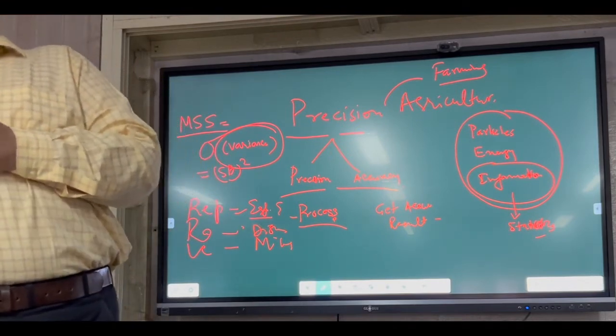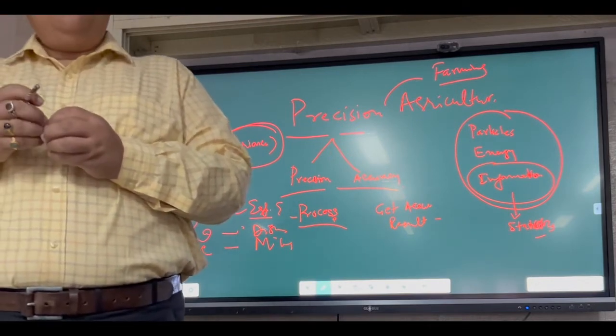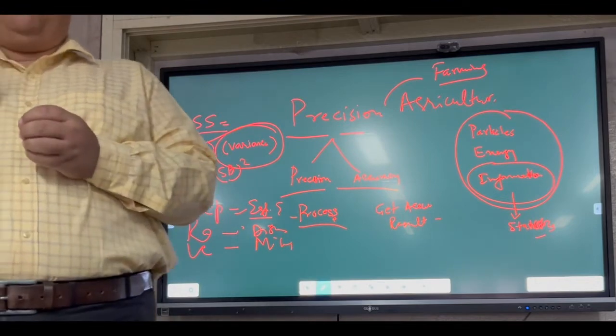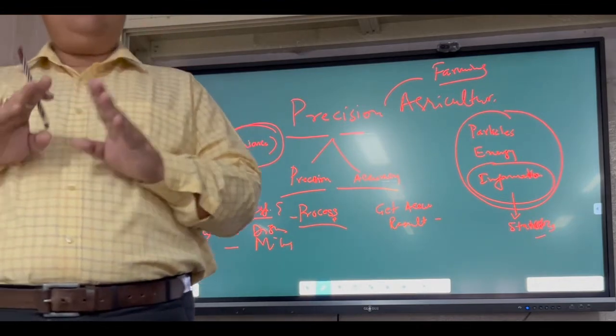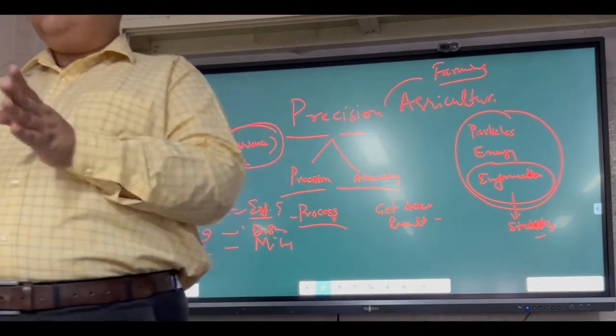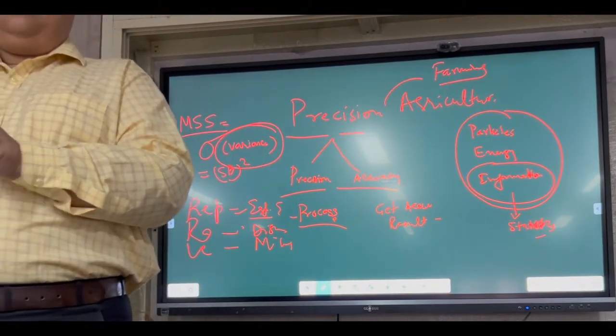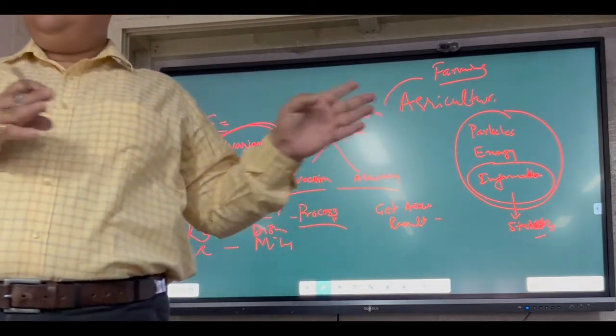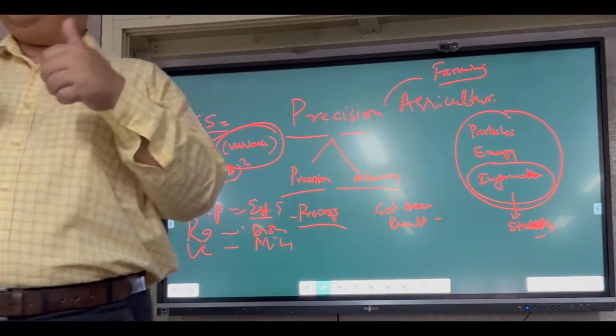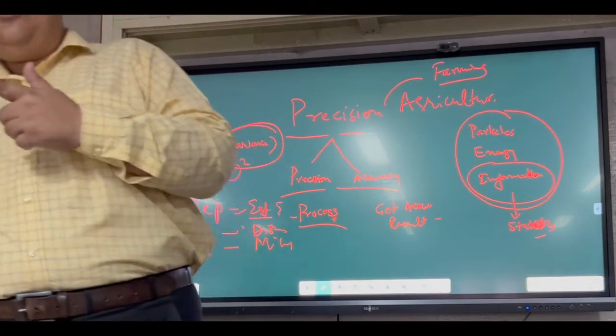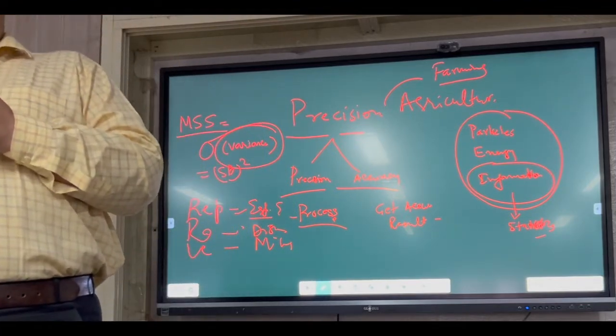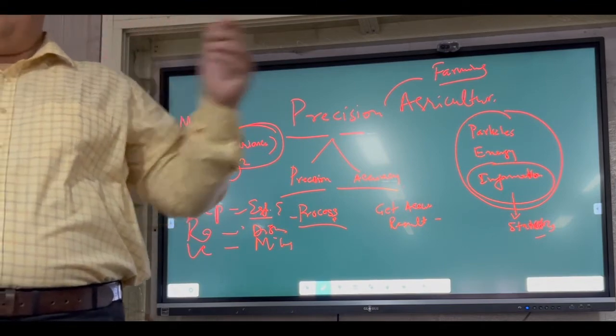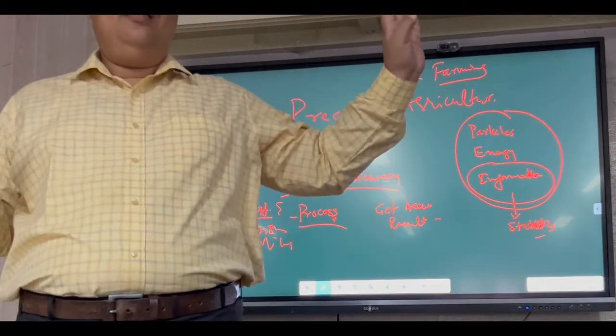We determine cycle speed, smoothness, which road to take, so we reach in 8 minutes. Precision is a process. Accuracy is result. In case of precision agriculture, if we define it traditionally, precision agriculture is a process to harness solar energy for betterment of 5F.